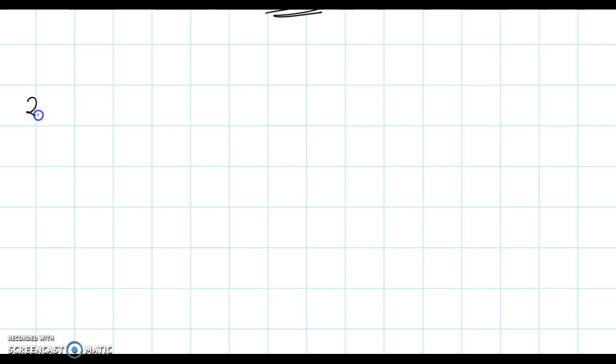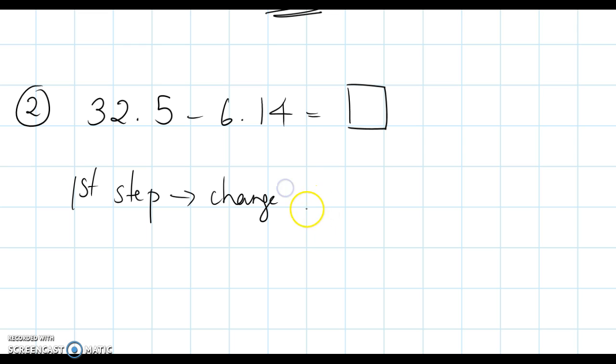Our second problem. 32.5 take away 6.14 equals we don't know. Okay. Just like the previous problem, look at the first step. Look at the lowest number and change the lowest number to a whole number.